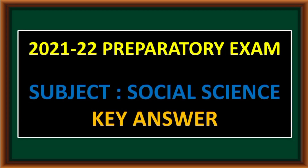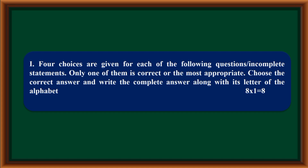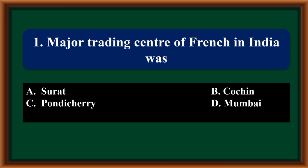10th Standard Social Science preparatory exam key. Four choices are given for each of the following questions. Only one of them is correct or the most appropriate. Choose the correct answer and write the complete answer along with its letter of the alphabet.